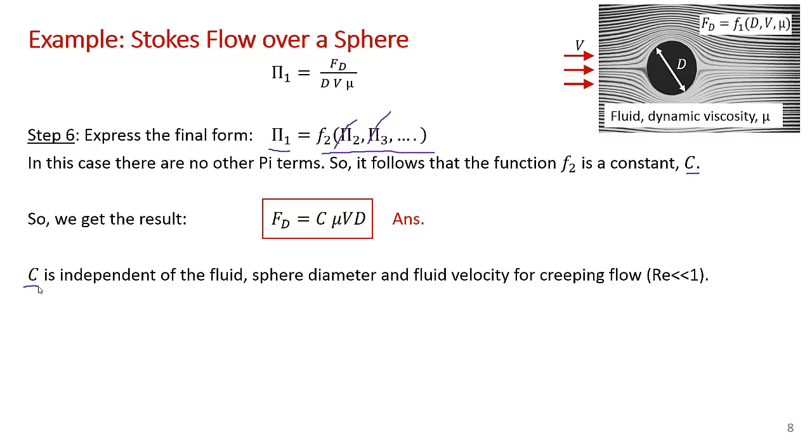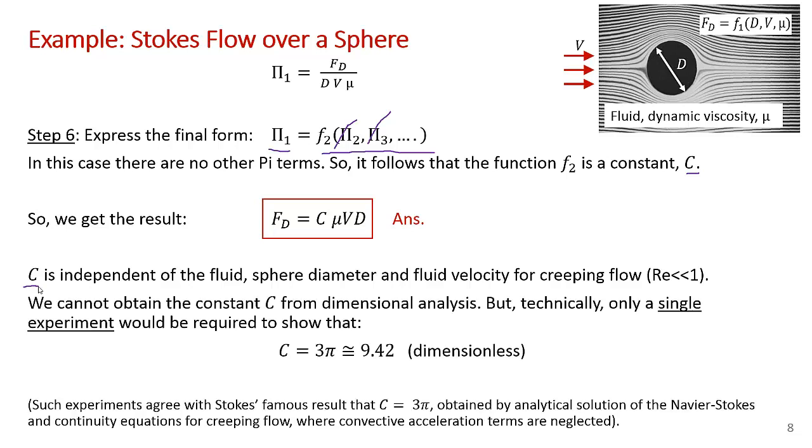We happen to know that's when you have a Reynolds number much less than 1. Now, that's as far as dimensional analysis can take you. You can't obtain the constant C from dimensional analysis, but technically you only require a single experiment in a single fluid to get that constant C. Of course, in reality, you'd want to do experiments with a number of cylinders and check that it is a constant.